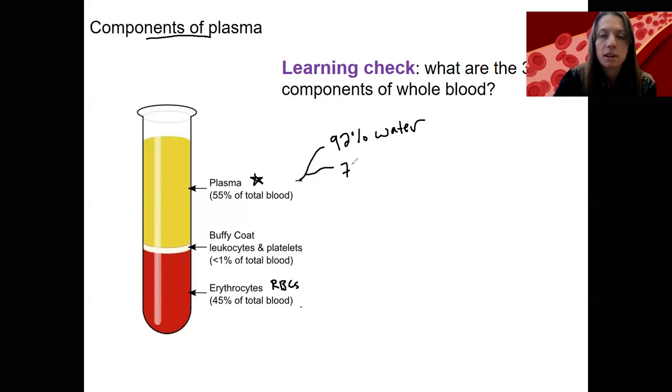It's about 7% protein. And the proteins that make it up, the most common one is albumin. Some of you may have heard of albumin. So serum albumin is something you use in some labs, maybe other biology labs.